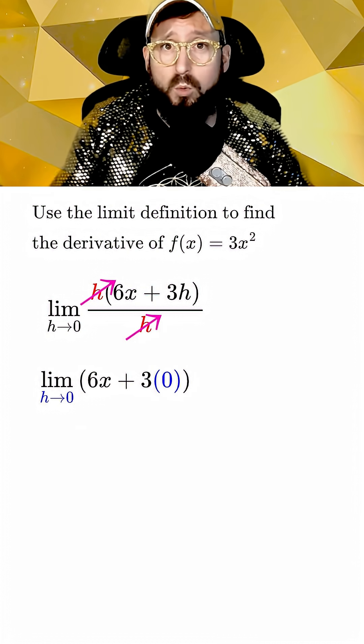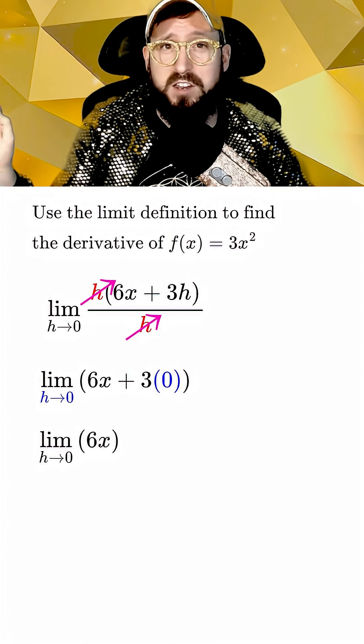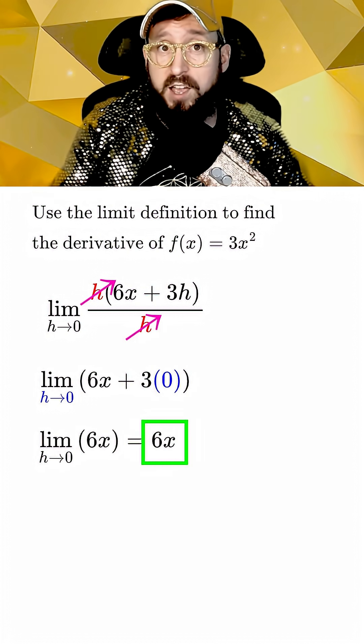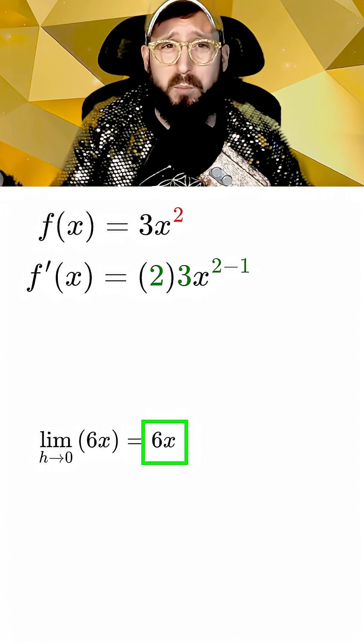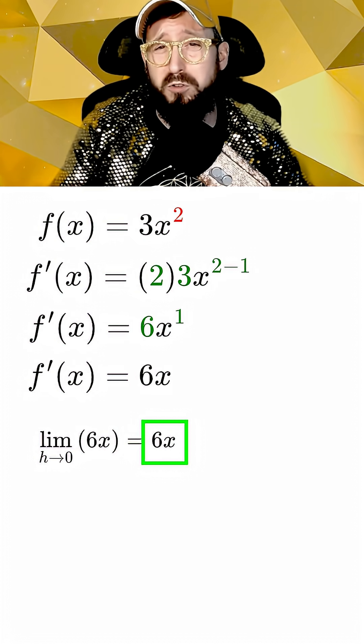Now when we set h equal to 0, we're no longer divided by 0. And this gets us a nice answer for the derivative, which is just 6x. Spoiler alert! This is the same answer you get for using the super simple power rule on a polynomial, which will also just give you 6x.